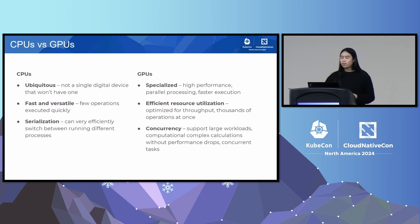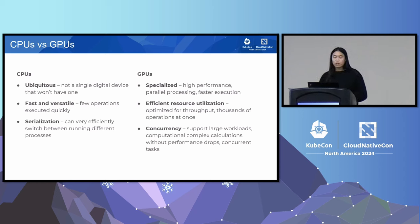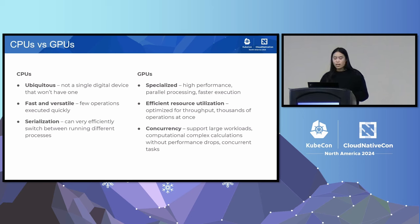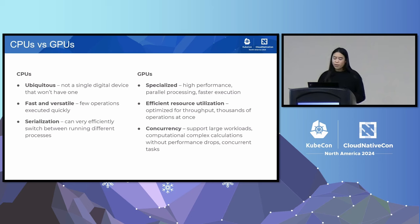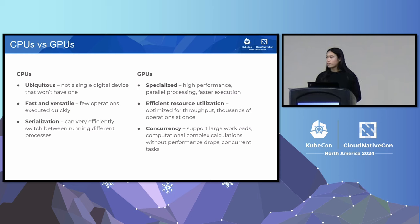GPUs are fundamentally different from CPUs because of how they're architected and built. CPUs are ubiquitous, more general purpose, fast and versatile — they can handle really complex processes with varied instructions. GPUs are much more specialized processing units, optimized for performance, parallel processing, and throughput, running thousands of operations concurrently, even repetitive ones. CPU processes are serialized, whereas GPU processes run concurrently. If a GPU is given a task, it'll subdivide it into thousands of smaller tasks and process them at the same time.